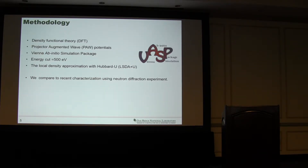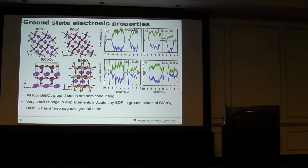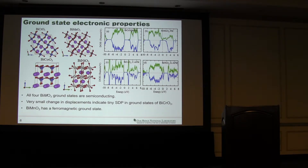To do that, we use density functional theory. I use a VASP simulation package and we are using LDA+U. We also compare our results with the neutron diffraction experiment. So first we look into the ground state properties of those materials. Here we can see chromium, bismuth chromium oxide, manganese, cobalt, nickel. All of them are semiconducting in their ground state. Among them, manganese is stabilized in ferromagnetic ordering, whereas others are in different anti-ferromagnetic ordering. When we look into the distortion to estimate the spin-driven polarization, chromium has very tiny spin-driven polarization, and others also not much.